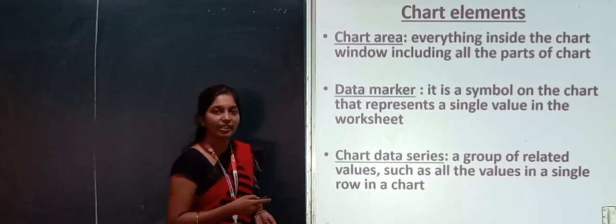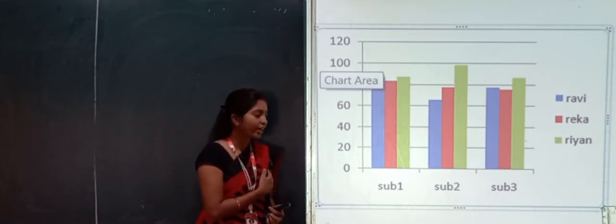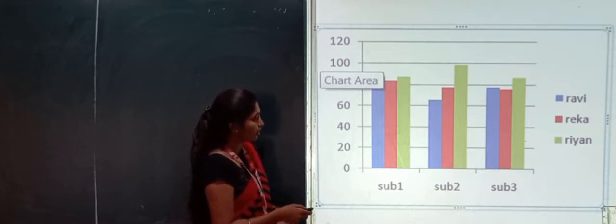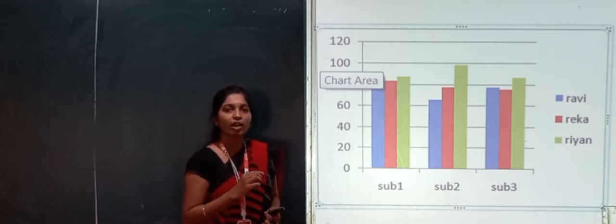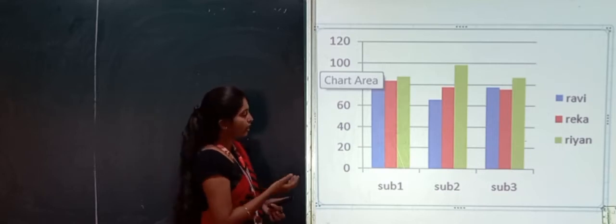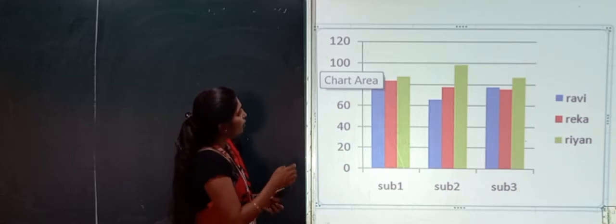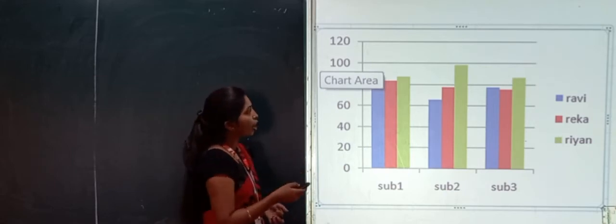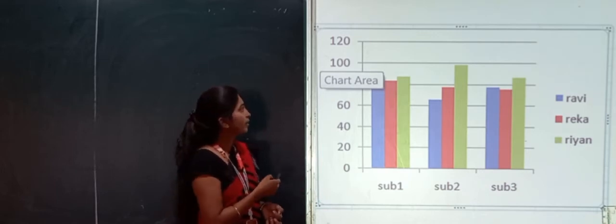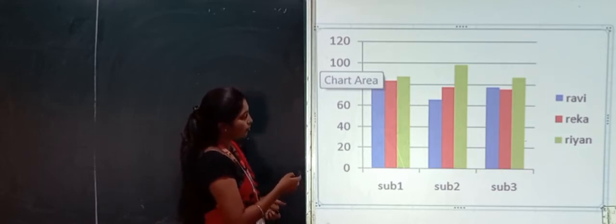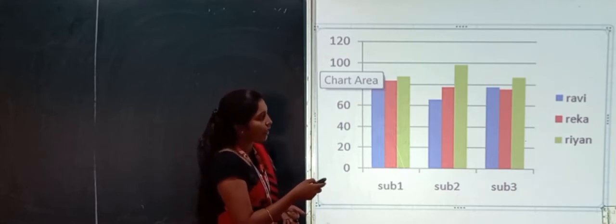Now we will discuss some of the chart elements. Looking at the diagram, subject 1, subject 2, subject 3 and values 0, 20, 40, 60 are shown — these are information on the vertical as well as horizontal axis. The area where the chart is plotted is the plot area, and the whole window is the chart area. The horizontal lines are called grid lines, and the different colors for different students are called the legend.